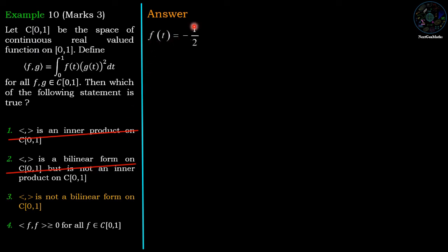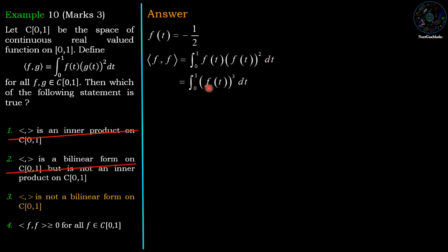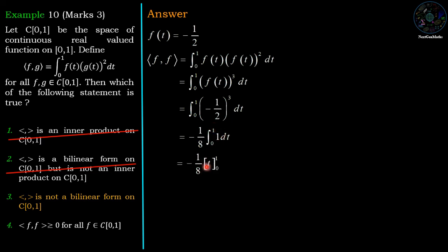If we take f(t) = -1/2, it is a continuous function on C[0,1] because it is a constant function. Now we find ⟨f,f⟩ = integration from 0 to 1 of f(t)·f(t)² dt = integration from 0 to 1 of f(t)³ dt. Since f(t) is the constant -1/2, this equals (-1/2)³ times the integration from 0 to 1 of dt = -1/8. So ⟨f,f⟩ = -1/8, which is less than 0 for this f belonging to C[0,1]. Therefore the fourth option is also wrong, since it claims ⟨f,f⟩ ≥ 0 for all f in C[0,1].